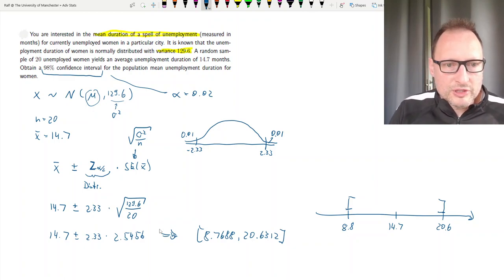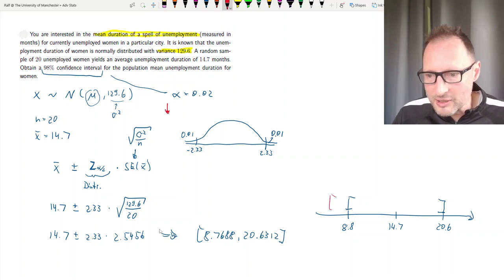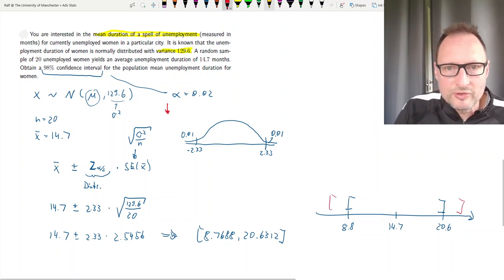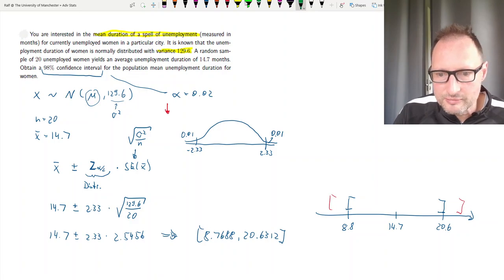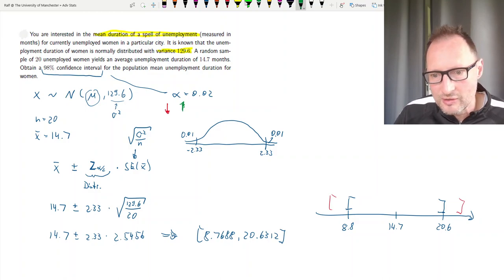If we reduced alpha, that means we would increase our confidence. We would get a wider confidence interval. If we increased alpha, meaning we reduced the confidence, we would get narrower confidence intervals.